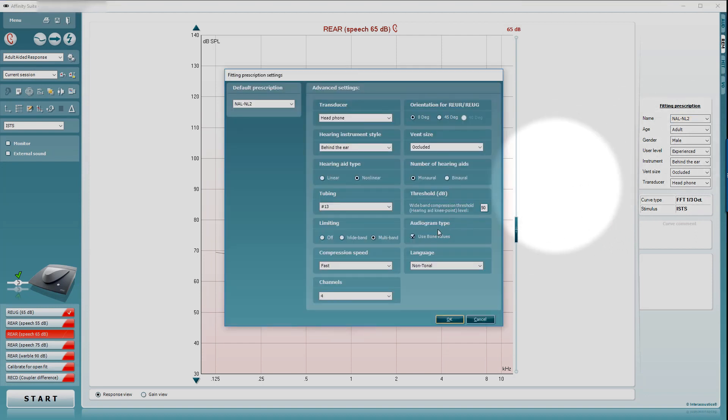We can go back in there and turn that off, or we could even change our prescription to look at what DSL might prescribe for such a loss. We won't do that in this scenario though.